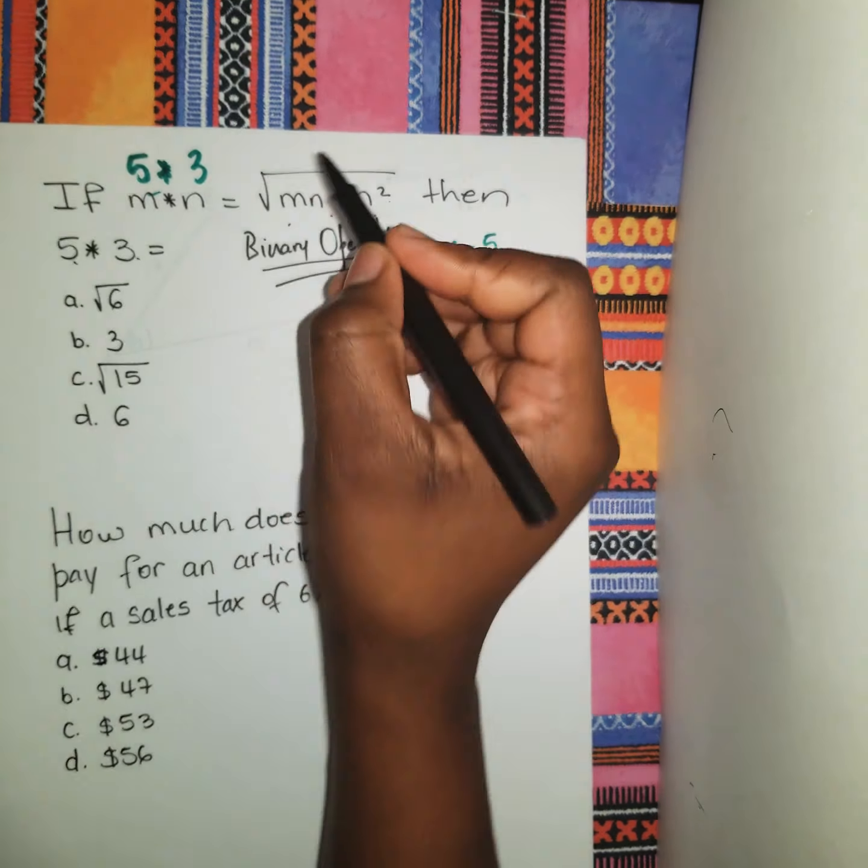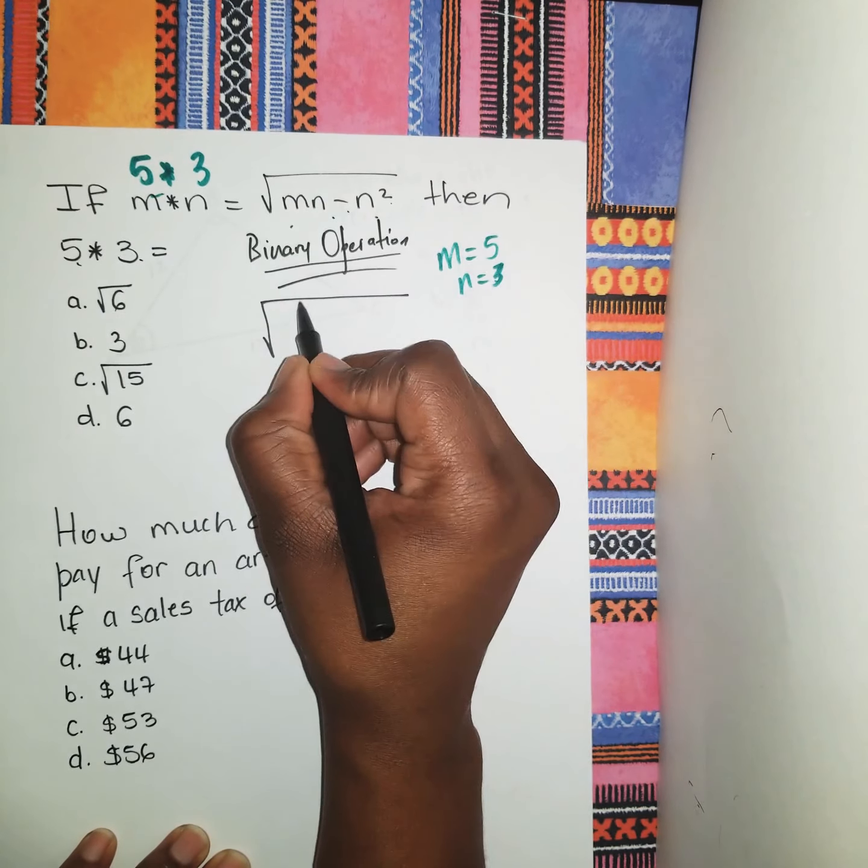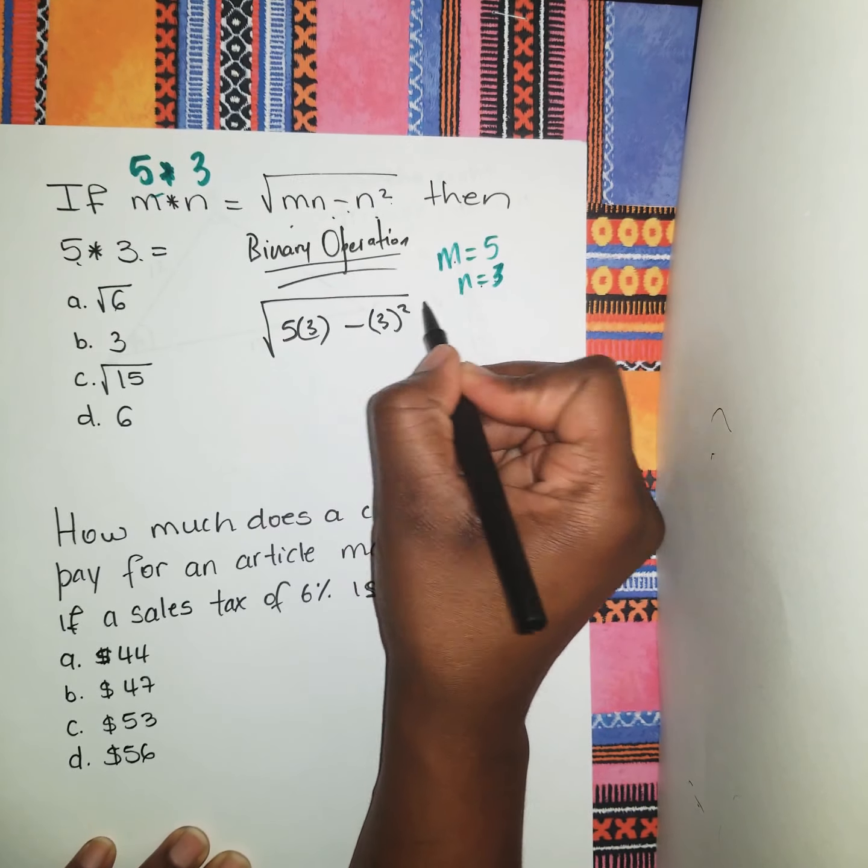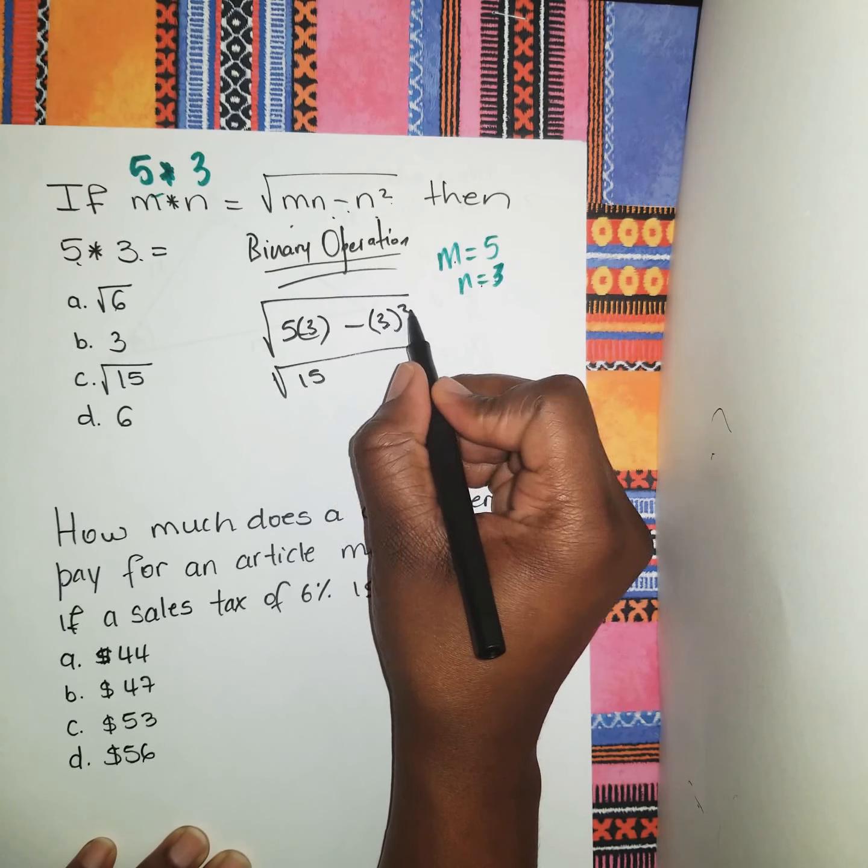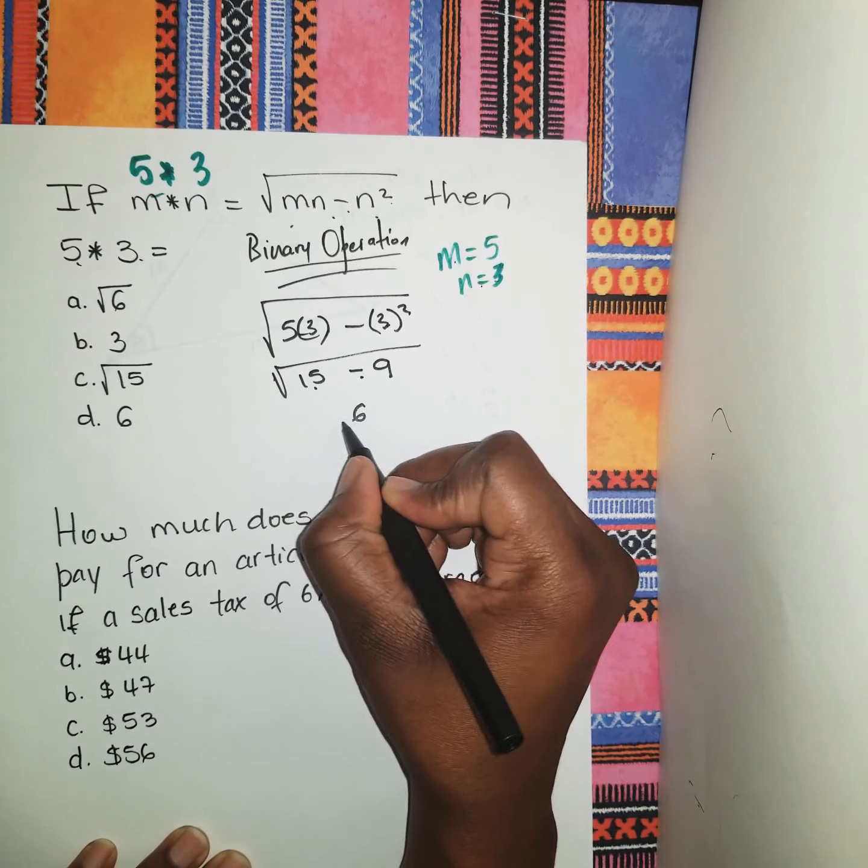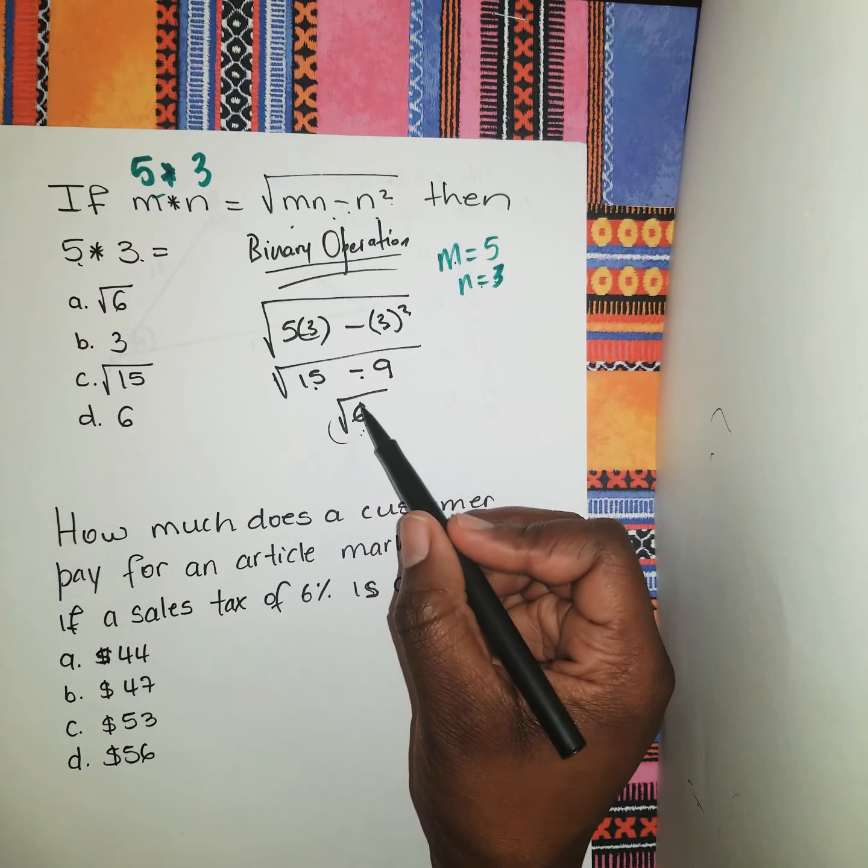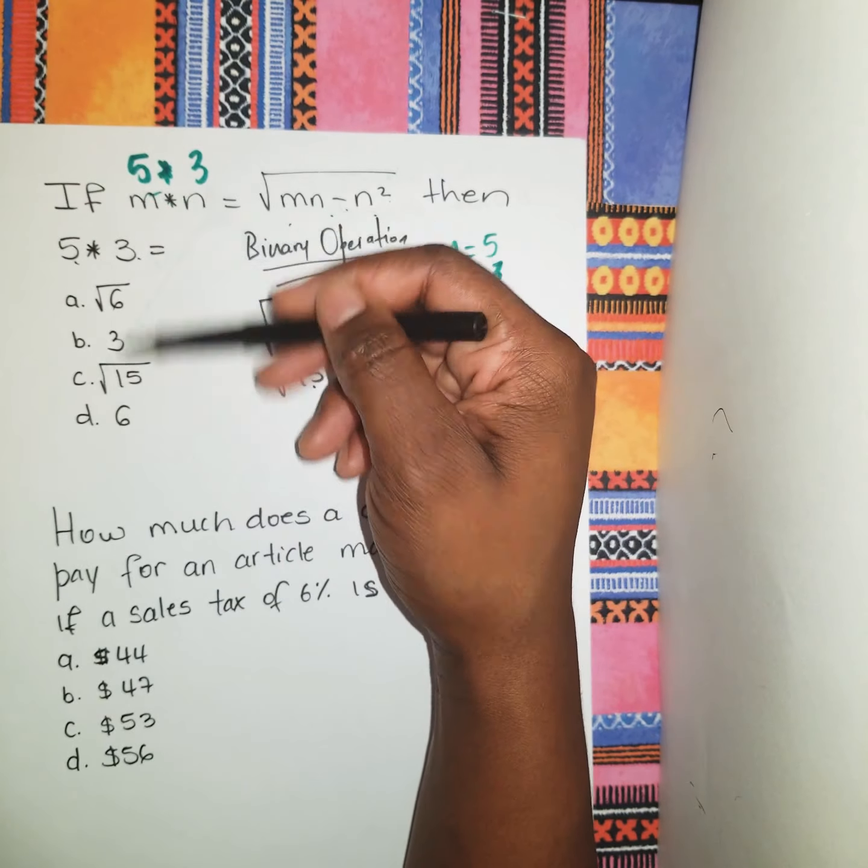So it's the root of m, which is 5, n, which is 3, minus n, which is 3, squared. Let's continue. 5 times 3 is 15, 3² is 9, 15 - 9 is the root of 6. And if you want to simplify, you could go further, but right here there's nothing for us to do. So let's see, the answer is over here. So the answer is √6, and that here goes right at A.